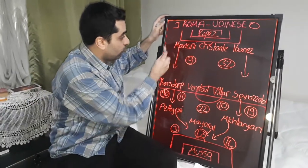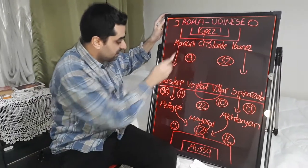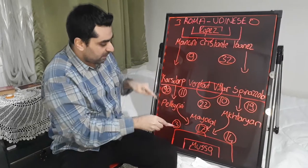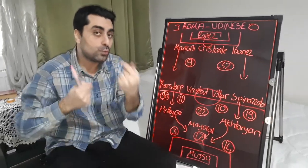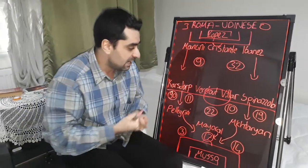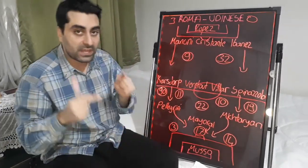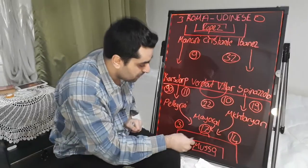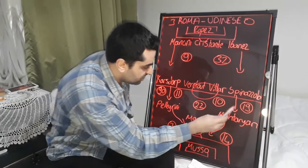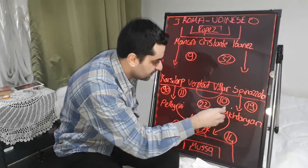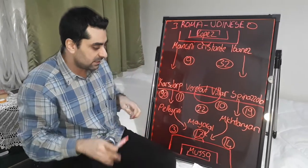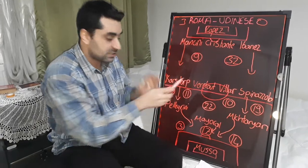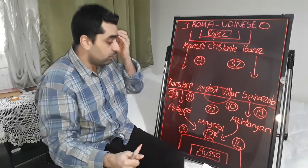In the first goal, Mancini came forward and sent the ball into the penalty area — Werotut scored with his head. Werotut then scored a second goal from the penalty spot after goalkeeper Musso brought down Mkhitaryan and the referee awarded a penalty.